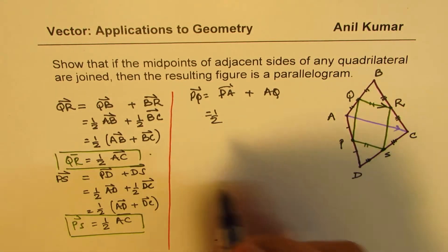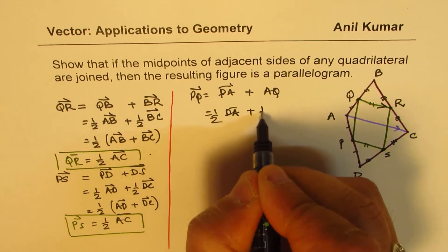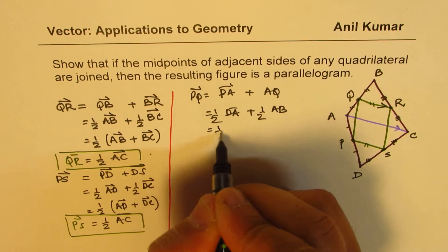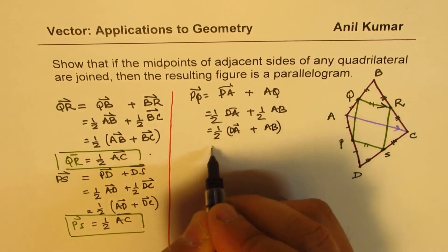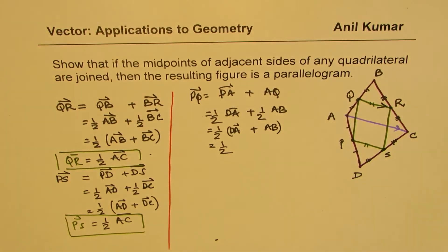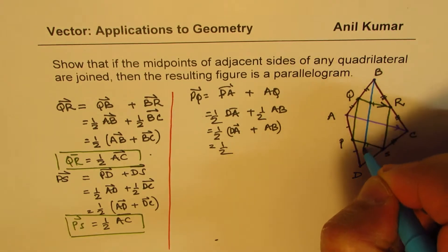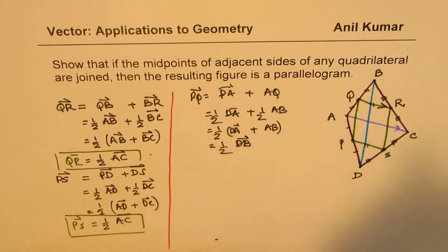Which is half of DA plus half of AB, which is half of DA plus AB, which is half of the other diagonal, which is D to B.